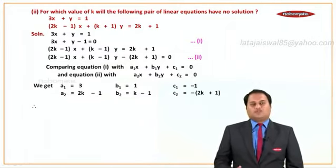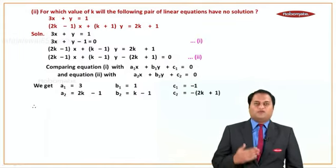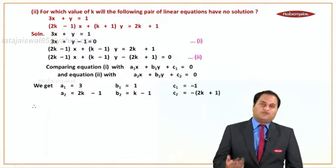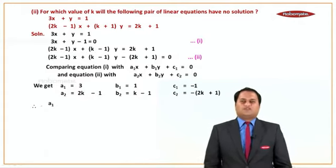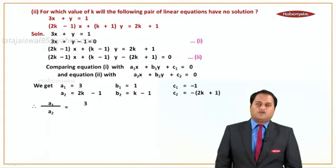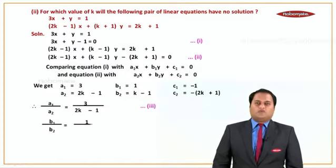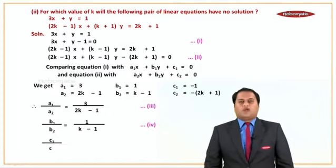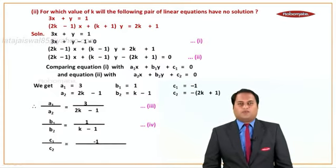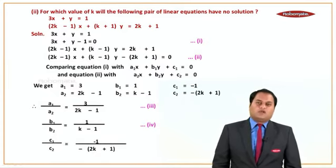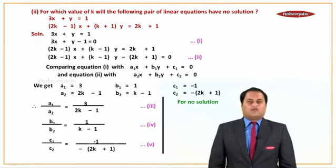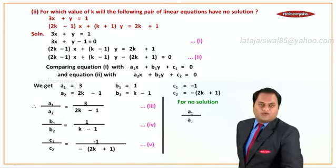Then find the ratios. The condition given is no solution. No solution means: a1 upon a2 equals b1 upon b2, but not equal to c1 upon c2. So: a1 upon a2 equals 3 upon 2k minus 1 (equation 3), b1 upon b2 equals 1 upon k minus 1 (equation 4), and c1 upon c2 equals minus 1 upon minus 2k plus 1, which simplifies to positive (equation 5).